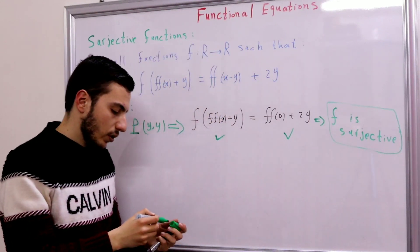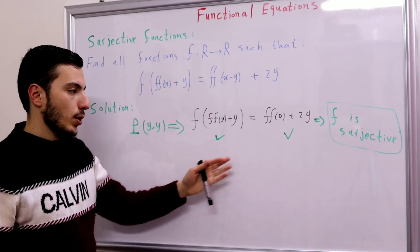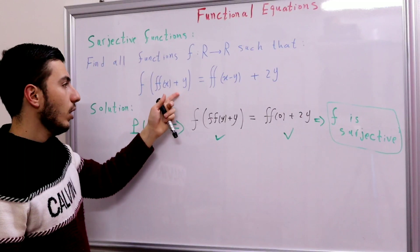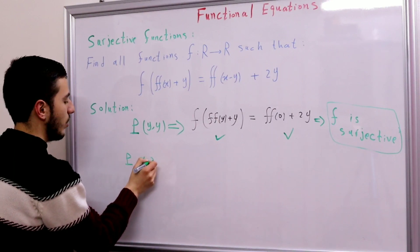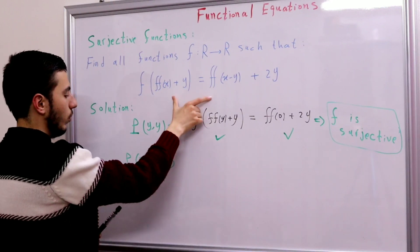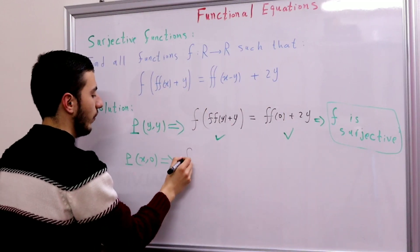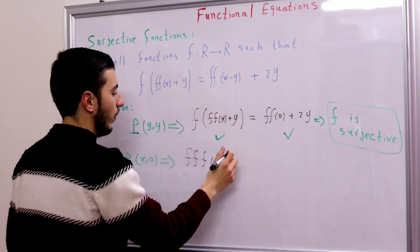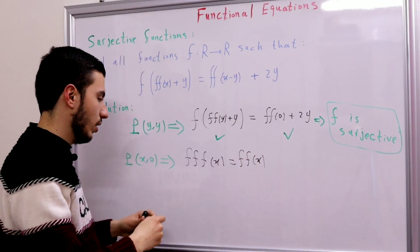So that's our first claim: f is subjective. Now let's substitute y with 0. Looking at the functional equation with y = 0, we get f(f(f(x))) = f(f(x)). So now we have this functional equation: f(f(f(x))) = f(f(x)).